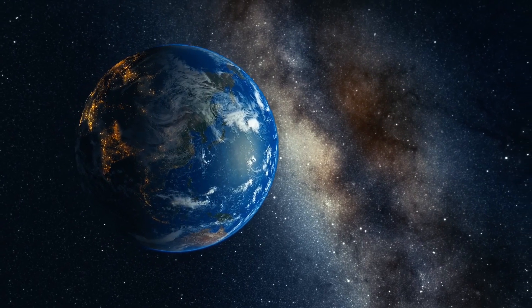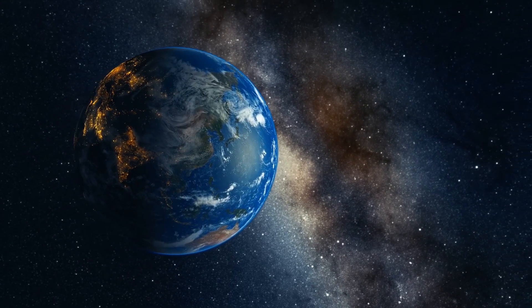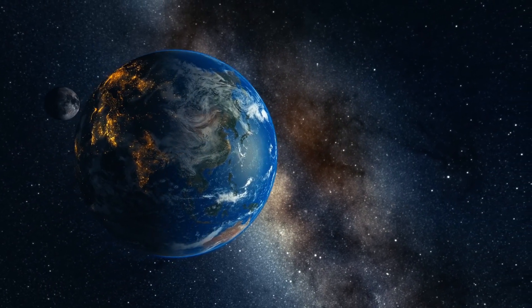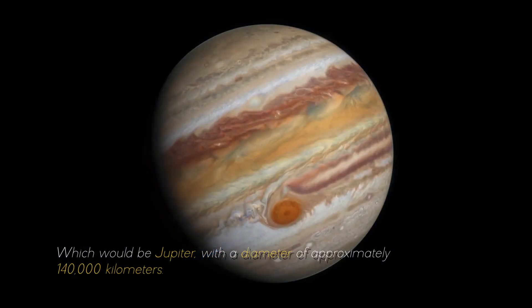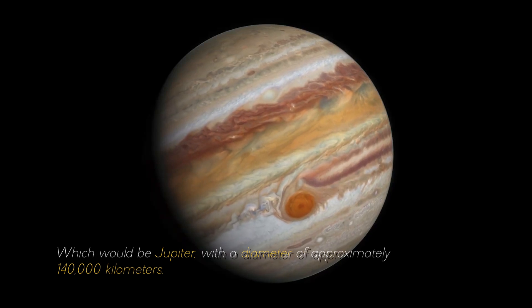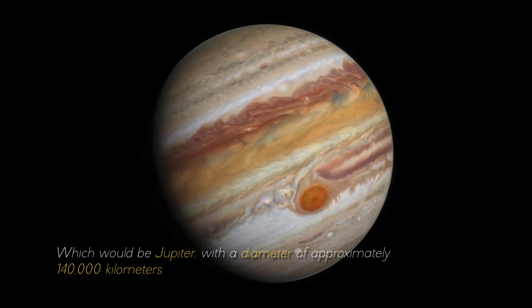If we compare it with the largest planet in our solar system, it would look like a ping-pong ball in front of a soccer ball, which would be Jupiter, with a diameter of approximately 400,000 kilometers.